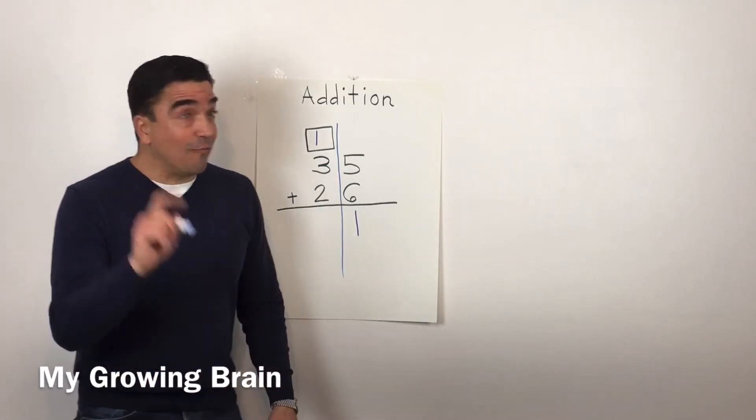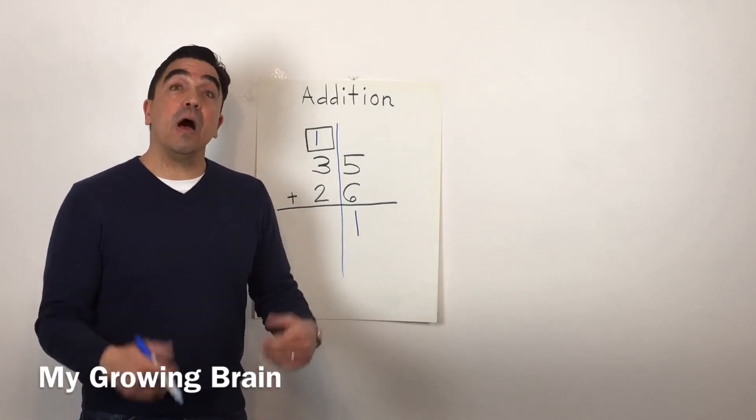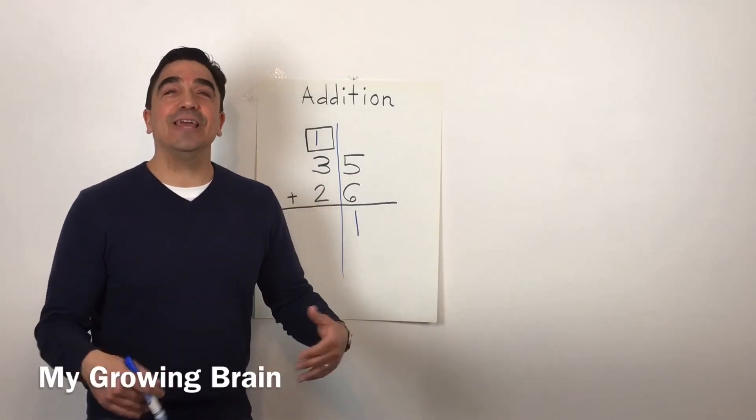Don't forget. I can't forget about the one in the regrouping box. So, five plus one equals six.